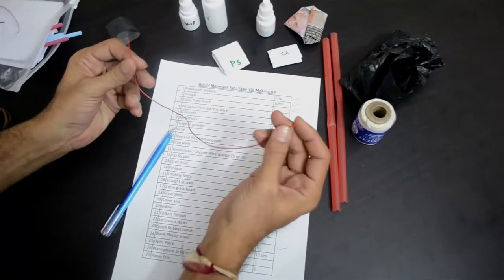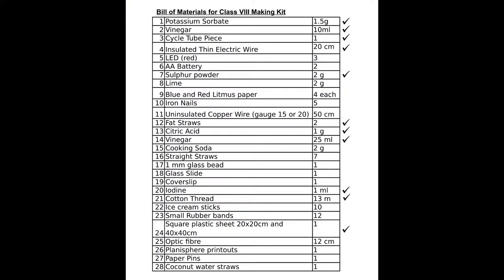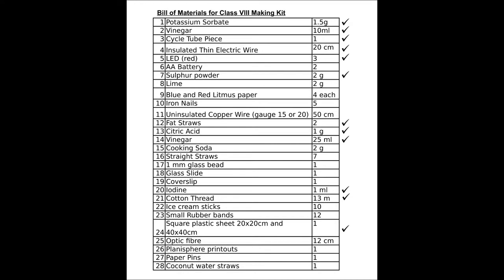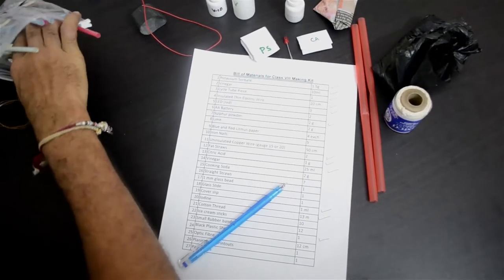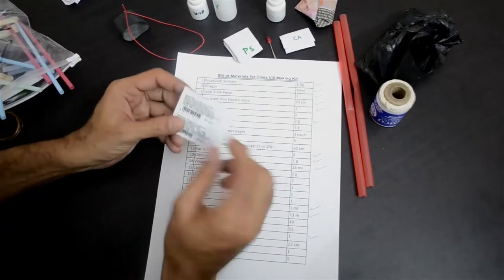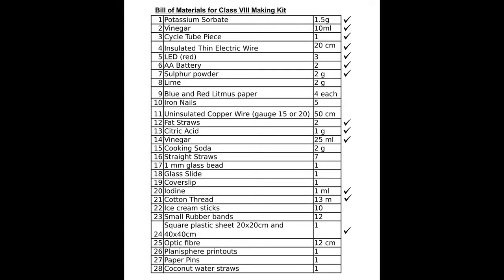Electric wire, a thin electric wire, which is an insulated wire. That's item number 4 in our list. You will also find one red LED. That's item number 5 in our list. And for glowing 1 LED, if you are using battery, you require 2 AA batteries, 1.5 volt 2 AA batteries. That's item number 6 in our list.